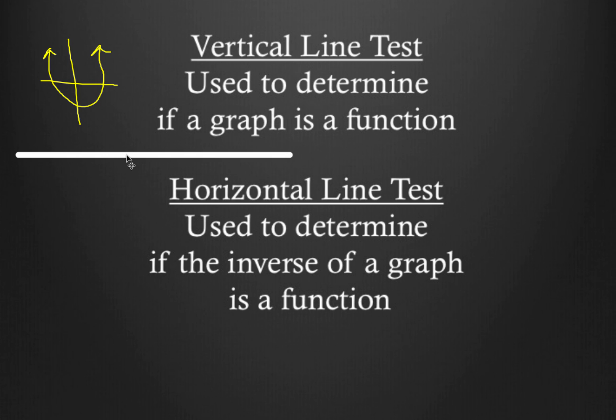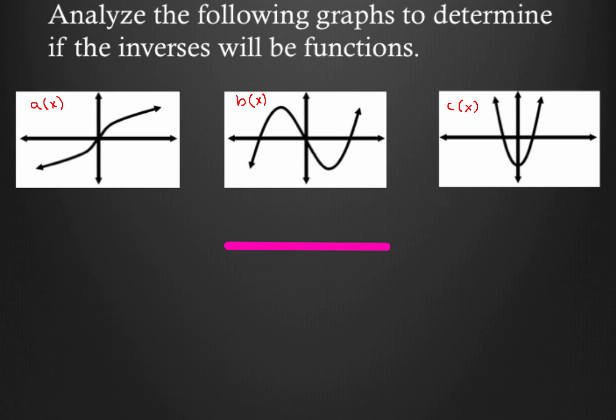So let's take a look at three examples here pretty quickly. What we're going to do here is analyze the following graphs to determine if the inverses will be functions. So we're going to use a horizontal line test. I'm going to call the first one a of x, the second graph b of x, and the third graph c of x. So all three of these functions are graphed for you on your screen.